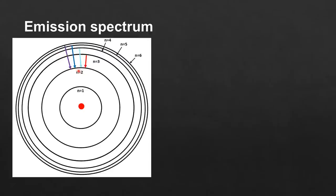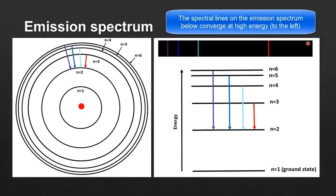In the previous example we saw how electrons transition to higher energy levels when they absorb energy, related to the wavelength of visible light. Now the arrows are going in the opposite direction — these electrons are transitioning from higher energy levels to lower energy levels, and each electron transition has its own color. Here we have our emission spectrum, which has colored lines on a black background, with energy levels from n equals 1 to n equals 6.